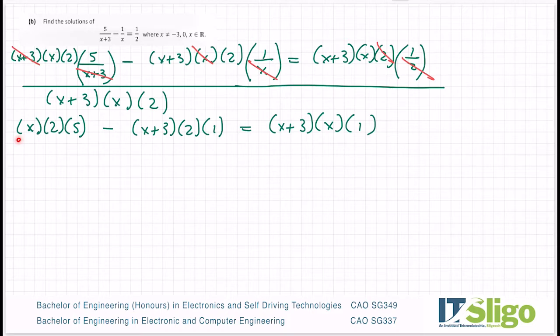So 2 cancels with 2, the x cancels with the x, and the x+3 cancels with the x+3. So you're left with x times 2 times 5 minus (x+3) times 2 times 1 being equal to (x+3) times x times 1. When you're multiplying three terms by each other like we have here, what you tend to do is multiply two together first and then multiply it by the answer. And it doesn't matter which order you do them in. I'm going to do 2 by x here to give me 2x. And that still has to be multiplied by the 5. In this one, I'm going to do 2 times 1. And I'm going to put square brackets around that because of the minus here. So it's minus all of this.